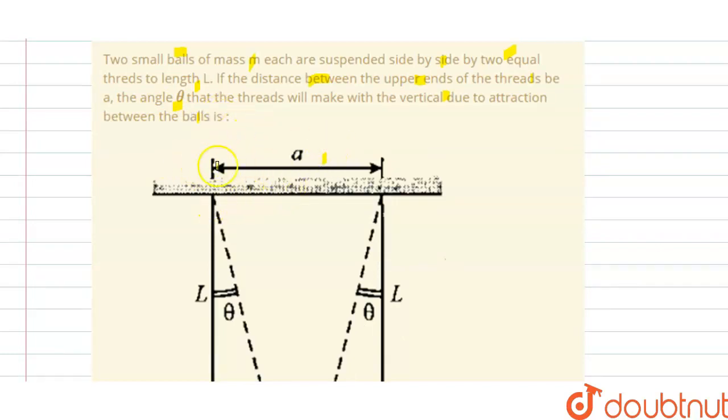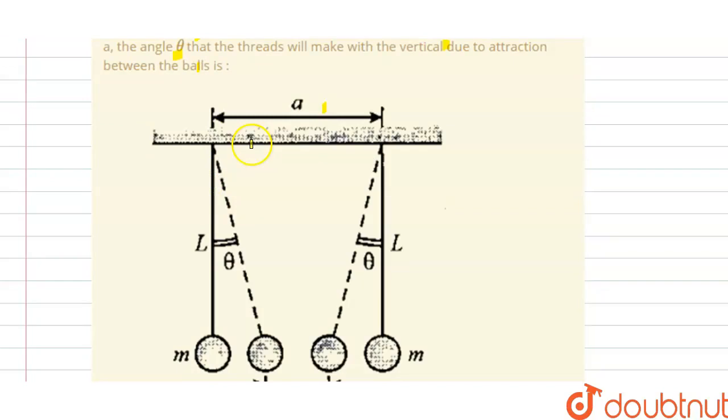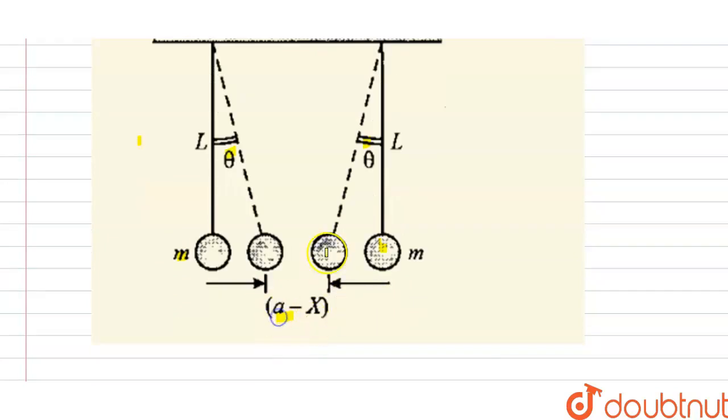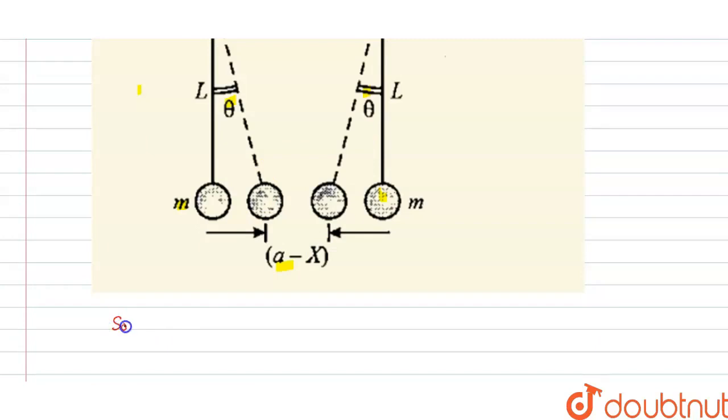So here, distance between the upper ends is a, and this is l, and this is theta. Here mass m and this is mass m, and this distance is a minus x. So the solution of this question is, we have to find the angle theta here.